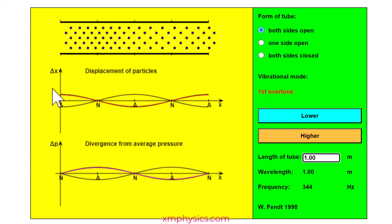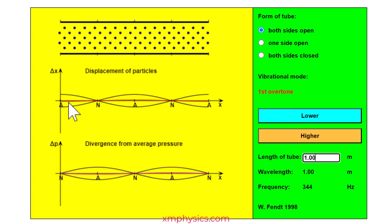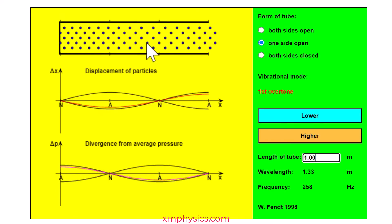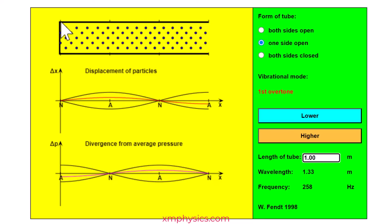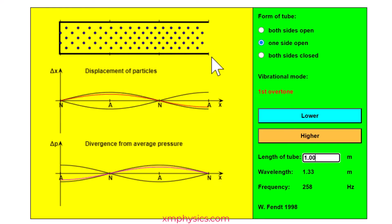So for an open pipe you have a displacement anti-node at the open end which means it's a pressure node at the open end. Now you are looking at a closed pipe. A closed pipe has one closed end and one open end. I'm sure you would have been clearer if we call this a one end closed one end open pipe but you know we are quite lazy so we call it a closed pipe.